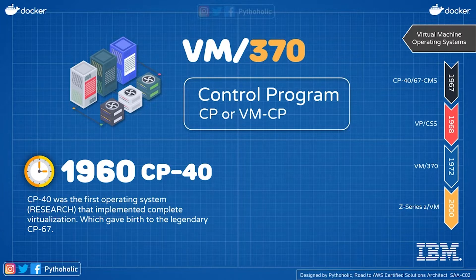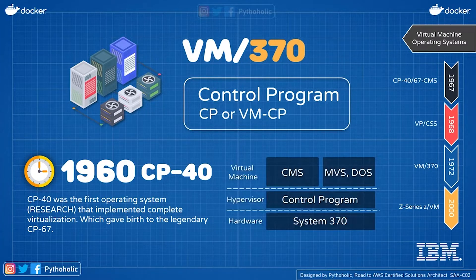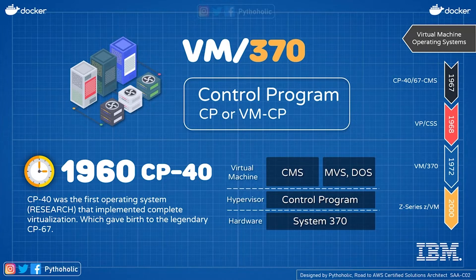CP40 was the first research-based operating system that implemented complete virtualization, and it later gave birth to the legendary CP67. You might be thinking virtual machines can only run because of the hypervisor — and that's correct. The CP, or Control Program, is what we call the hypervisor today. The System 370 mainframe was the hardware, and the Control Program created an environment for resources to be shared.